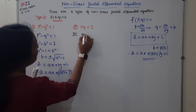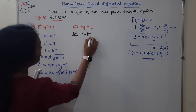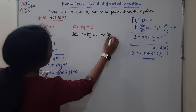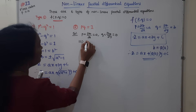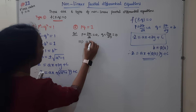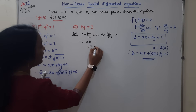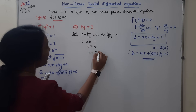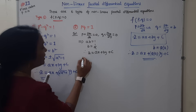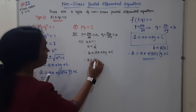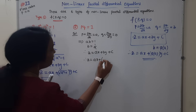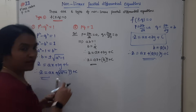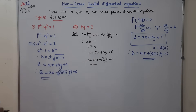The next equation is pq = 1. We know p = ∂z/∂x = a and q = ∂z/∂y = b, so a·b = 1. Therefore b = 1/a. The general solution is z = ax + (1/a)·y + c.